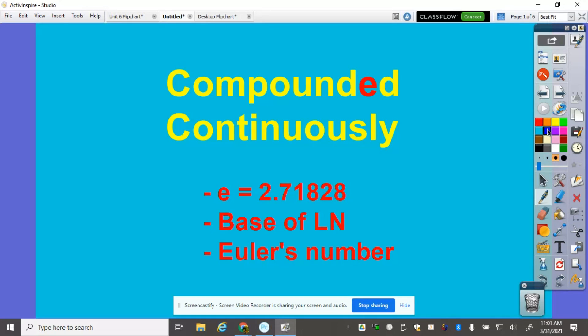Before we tackle Compounded Continuously, what is important about this? It's the E. What is E? E is a mathematical constant. It's a very special number for math.